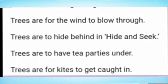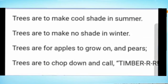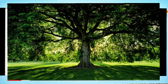Trees are to make cool shade in summer, trees are to make no shade in winter, trees are for apples to grow on and pears, trees are to chop down and call timber. During summer season, trees provide us cool shade. During winter season, trees provide no shade.